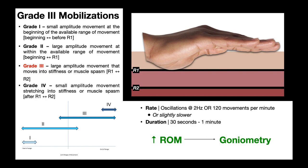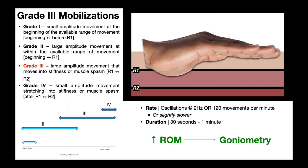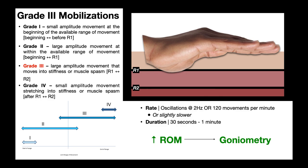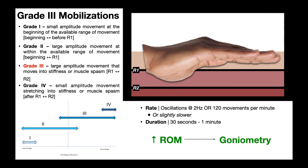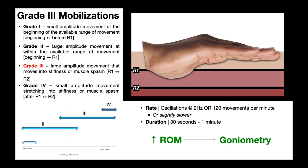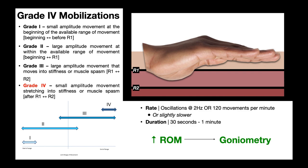Grade three mobilizations are large amplitude movements that move into stiffness or muscle spasm. The basic idea is we're beginning at R1 — the point where we've taken up all the slack — and now we're applying even more pressure, pushing that tissue beyond to R2. R2 is really that end range of available movement; we can't go much beyond that because we might risk tearing some tissue and causing injury. Generally speaking, grade three mobilizations move between R1 and R2.